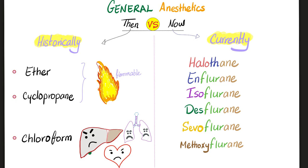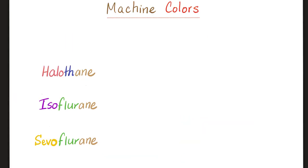But today we use halothane, isoflurane, desflurane, sevoflurane, and methoxyflurane. These inhaled general anesthetics have vaporizing machines, or vaporizers. The halothane vaporizer is red, isoflurane is purple/magenta, and sevoflurane is yellow.